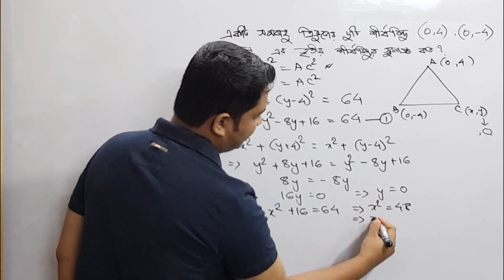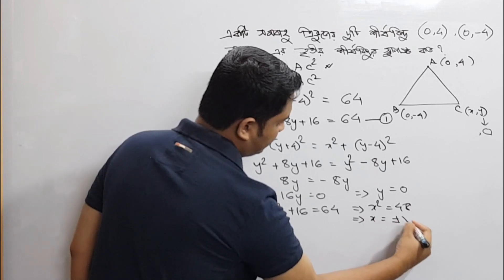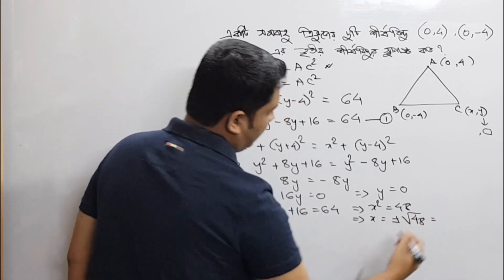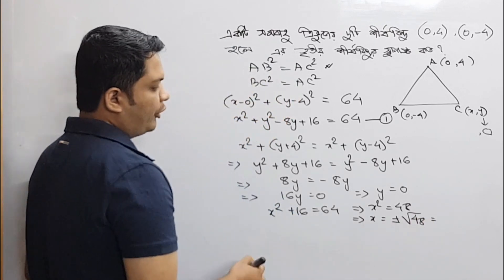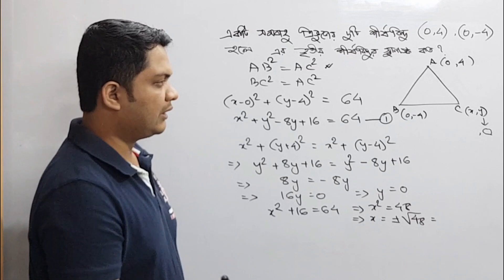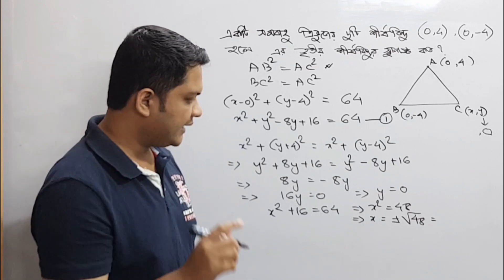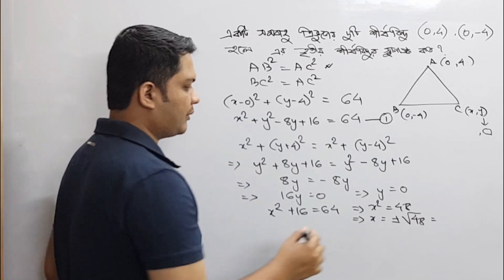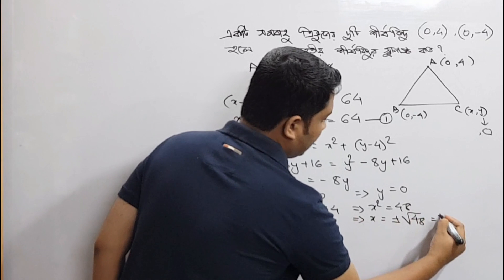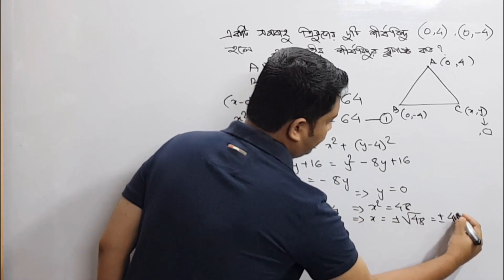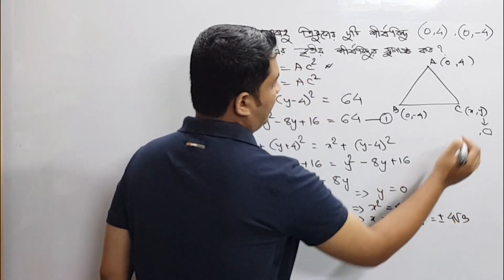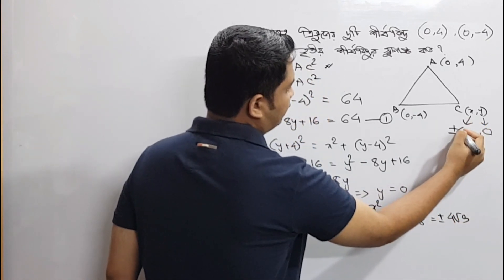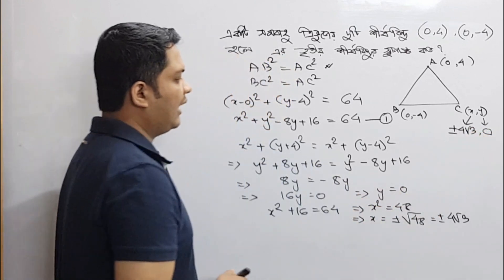So x is equal to 48. So x is equal to plus or minus root over 48. Root over 48 is equal to root over 3 into 16. 16 is equal to root over 4. So x equals plus or minus 4 root 3.